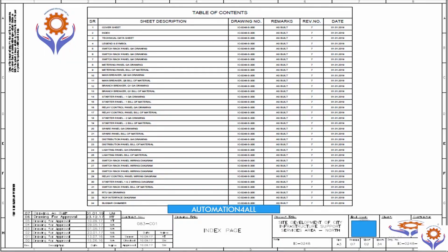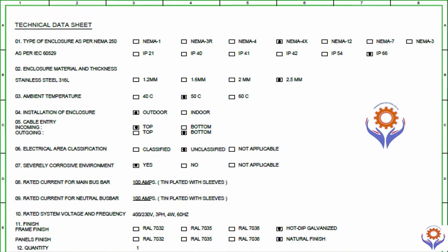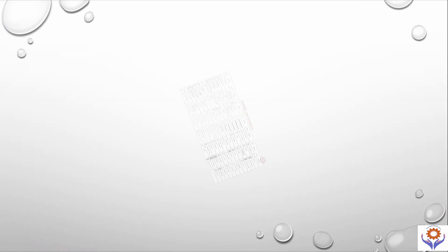On the next sheet, you can find the technical data sheets. For example, what types of enclosures you are going to use in the project — NEMA 1, NEMA 3R, NEMA 4, 4X, NEMA 2, NEMA 7 — along with the IP rating of the panel, the enclosure material and thickness, temperature ratings, electrical classifications, and the color of the panel.